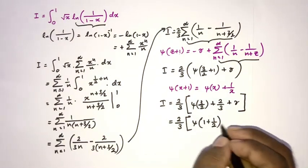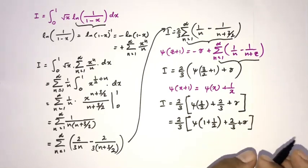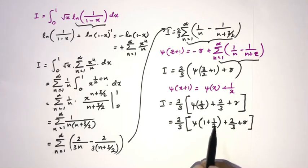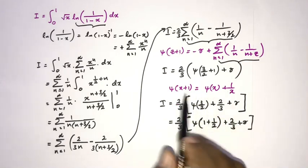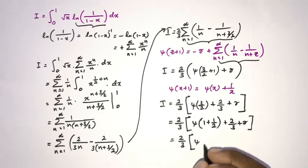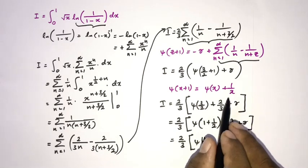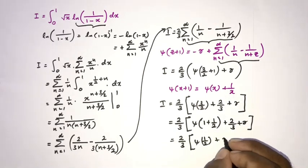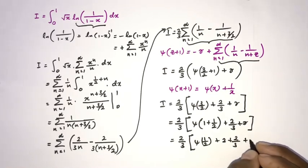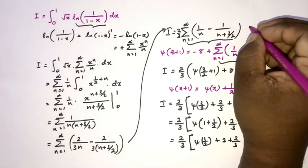So I equals two thirds times [digamma of one half plus two plus two thirds plus gamma]. Now we use the special value of the digamma function at one half: the digamma of one half equals minus two times the natural log of 2 minus gamma, where gamma is the Euler-Mascheroni constant.